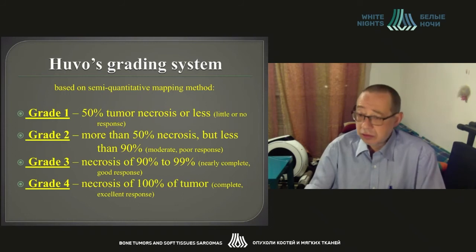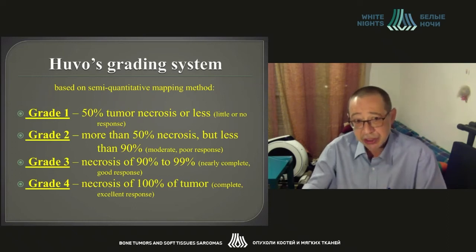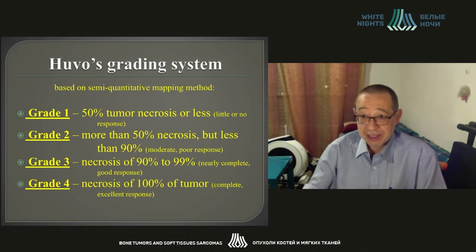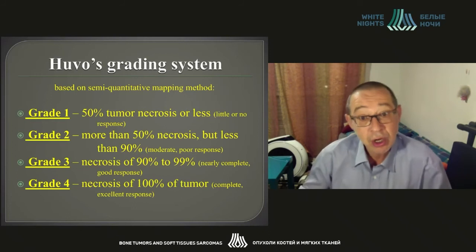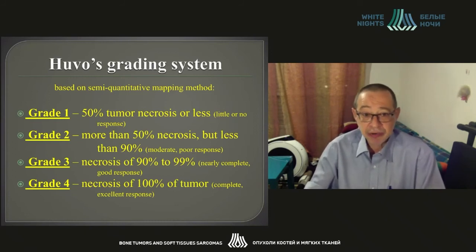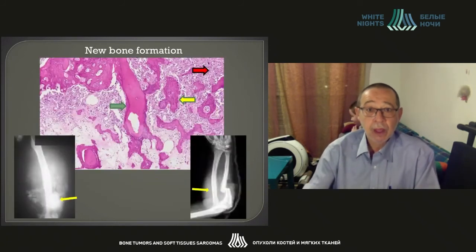The Huvos grading system provides a very good chance to detect the percentage of tumor necrosis. Grade one is approximately 50% of tumor necrosis or less, meaning little or almost no response to preoperative chemotherapy. Grade two is more than 50% but less than 90% tumor necrosis — a moderate or poor response. Grade three is 90–99% tumor necrosis, representing a nearly complete good response, and grade four is 100% tumor necrosis — a complete, excellent response.